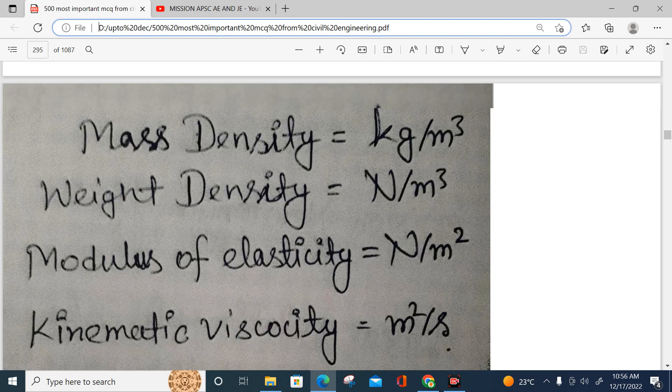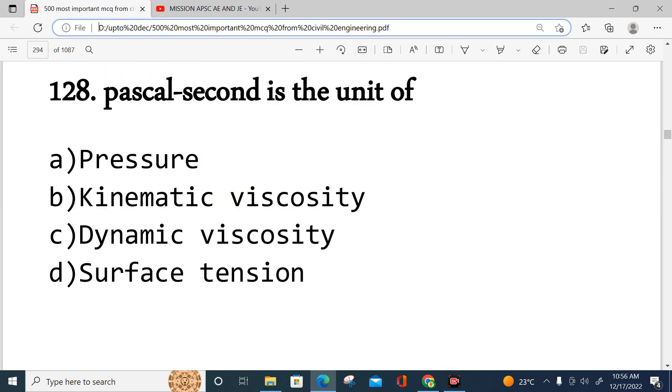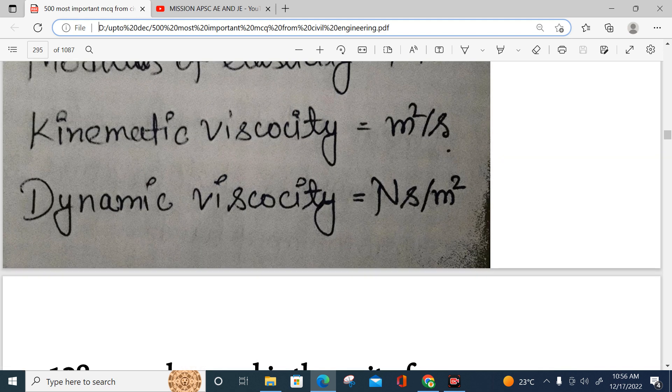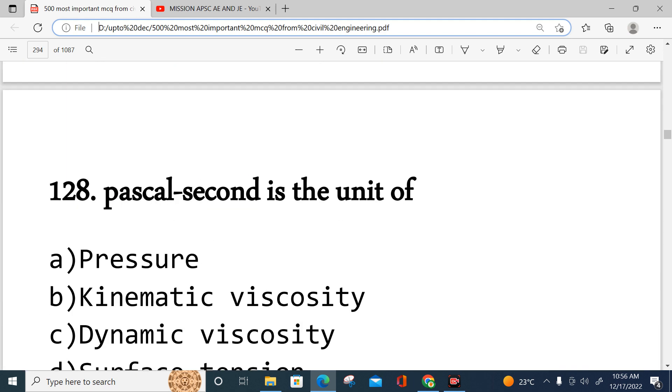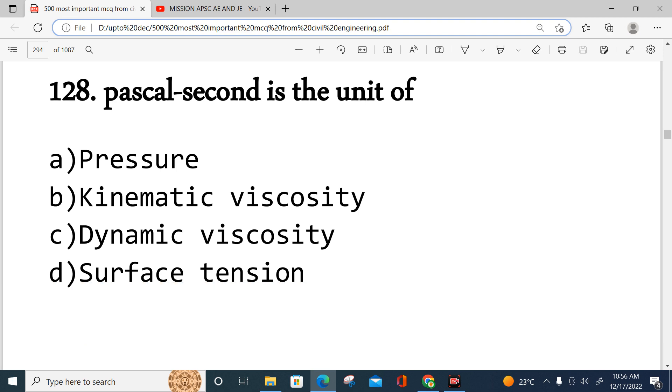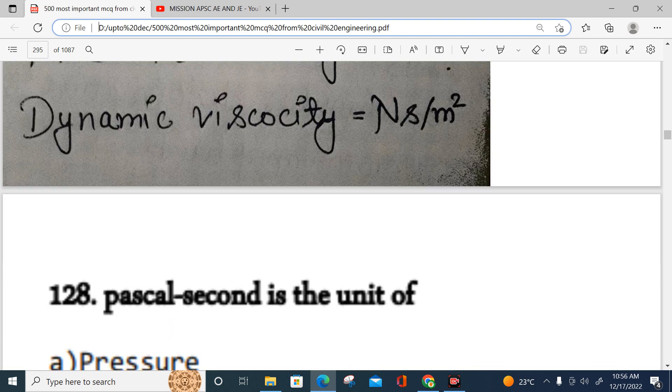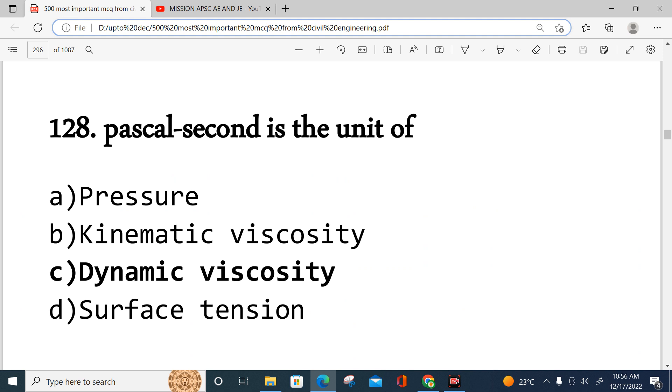Kinematic viscosity will be different, which means we will get kinematic viscosity. This is dynamic viscosity, Pascal second, Newton per meter square. Pascal into second. Option C is correct, which is about dynamic viscosity.